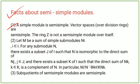Second, let M be a sum of simple submodules Nᵢ, i ∈ I. For any submodule N, there exists a subset J of I such that N is isomorphic to the direct sum of Nⱼ, j ∈ J, and there exists a subset K of I such that the direct sum of Nₖ, k ∈ K, is a complement of N. In particular, M/N is isomorphic to ⊕ₖNₖ. Third, subquotients of semi-simple modules are semi-simple.